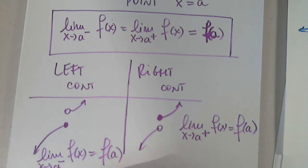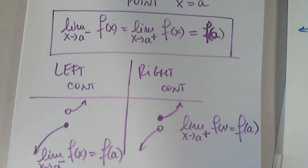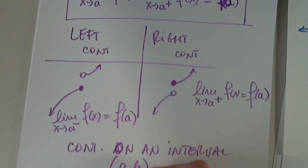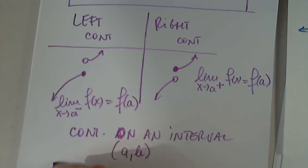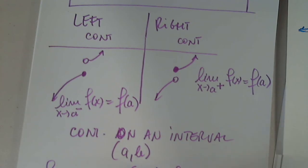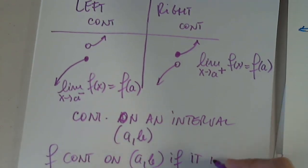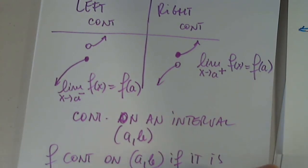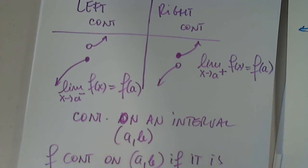Finally, continuity on an interval. On the interval a comma b, f is continuous on a comma b if it is continuous at every point on that interval. It makes sense — it is continuous on an interval if it is continuous at every single point on that interval. And now all we need to do is practice.